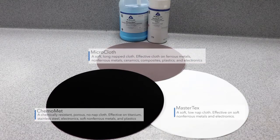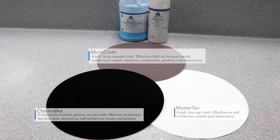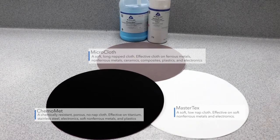Microcloth is a soft, long-napped cloth that provides an excellent surface finish on a wide variety of materials. MasterText is a softer, low-napped cloth effective on soft, non-ferrous metals and electronics. Comomet is a chemically resistive, porous, non-napped cloth that is effective on stainless steels, electronics, titanium and other refractory metals.